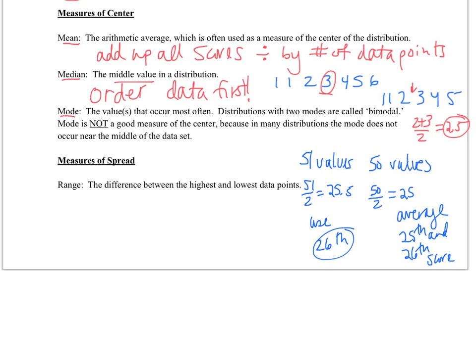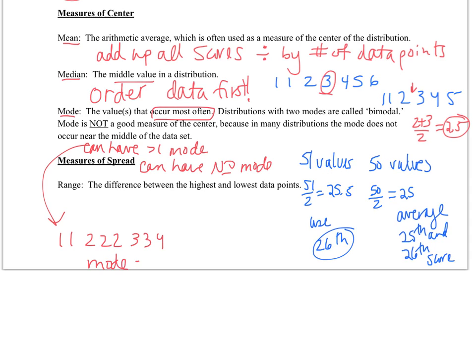Our last measure of center is the mode. And the mode is not really a very good measure of center because oftentimes the mode doesn't even tell you the center of the data. It's just the value that occurs the most often. It is possible for a data set to have more than one mode. It is also possible to have no mode. Now let's say we had a data set such as 1, 1, 2, 2, 2, 3, 3, 4. In this case, my mode would be equal to 2. Even though the values of 1 and 3 also repeated, the 2 occurred the most.